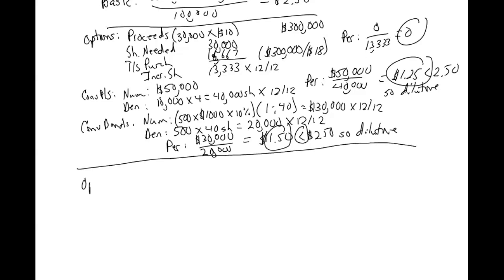So now we're going to do our dilutive earnings per share. So we start with the options. Remember, we start with basic earnings per share. So basic earnings per share was $250,000 over 100,000. And then we add in our numerator and denominator effect for each. And that gives me, let's just get our subtotal here so that we know where to start the next row with. So that equals $2.21.